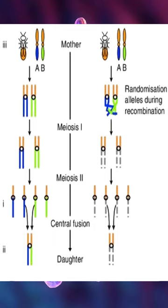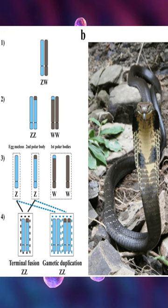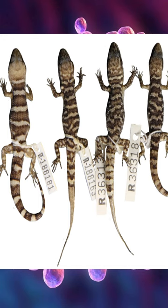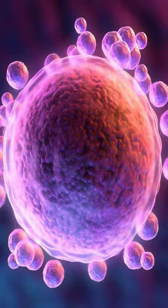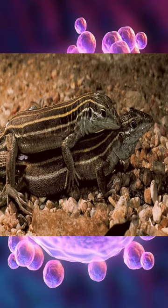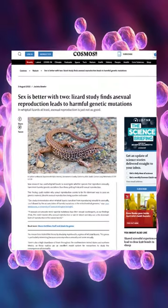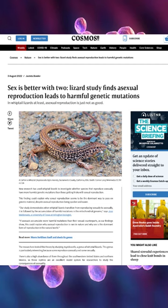While some forms of automyxis allow for genetic shuffling of the mother's genes and the creation of offspring that are not completely identical to the parent, parthenogenesis still has its fair share of setbacks. A recent study regarding a lesbian population of whiptail lizards found that their overreliance on parthenogenesis could lead to the accumulation of harmful mutations within the species.